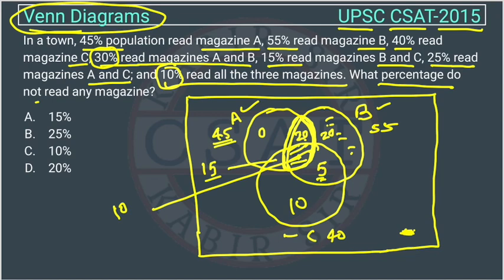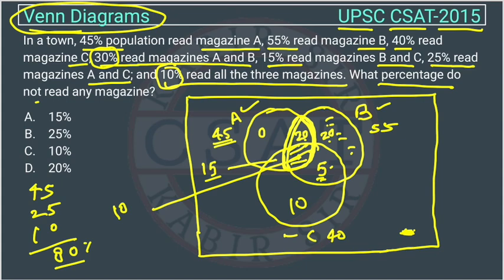We add all values inside the circles: circle A gives 45, plus the B∩C only region of 5, plus 20 and 10 already included, plus the center 10. The total inside all circles is 80%. Since the total is 100%, the remaining 20% are not reading any magazine. So the answer is option D.